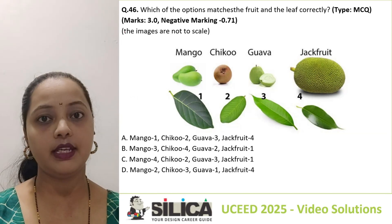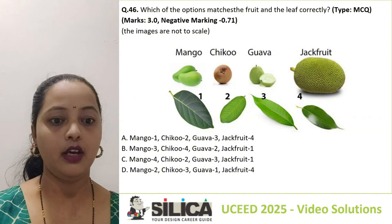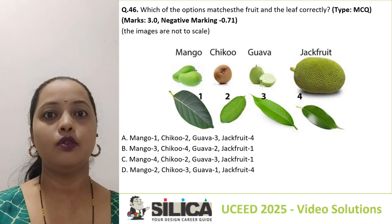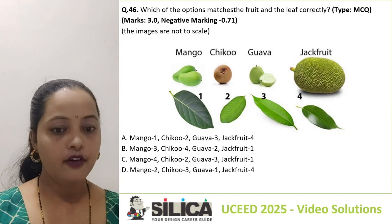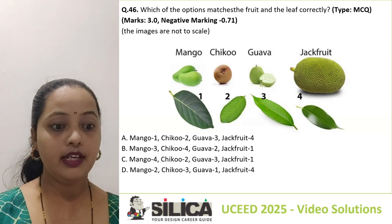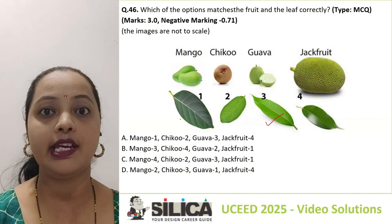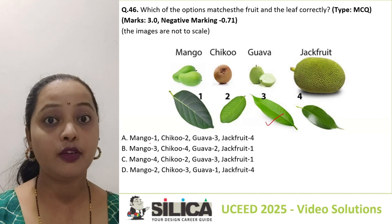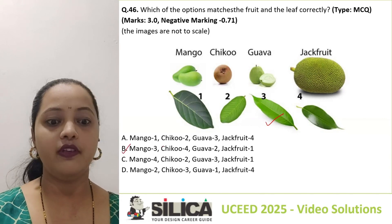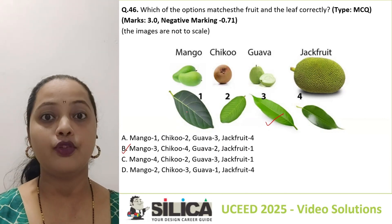This is question number 46, an MCQ question. Which of the options matches the fruit and the leaf correctly? We have four fruits: mango, chikoo, guava, and jackfruit, with their leaves. It is very easy to identify the mango tree leaf — that is image 3. There is just one option with the mango leaf connected to image 3, so the answer is option B: the third leaf is for mango, fourth for chikoo, second for guava, and the first for jackfruit.